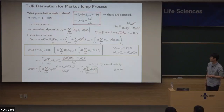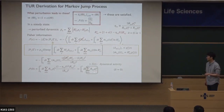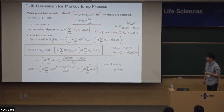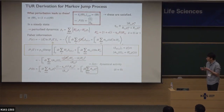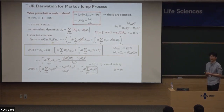This term is called dynamical activity. It represents the number of jumps per unit time induced by the transition from y to x, summed over all pairs of transitions. This means it is the total number of jumps per unit time, which is why we call this the dynamical activity.